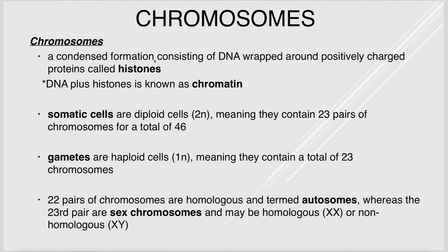In each of our cells we have lots of DNA that must be packaged. In a dividing cell we package it as chromosomes; in a non-dividing cell we call it chromatin. A chromosome is a condensed form of DNA wrapped around positively charged proteins called histone proteins. DNA is negatively charged, so it wraps around these proteins — like yarn around a spool.